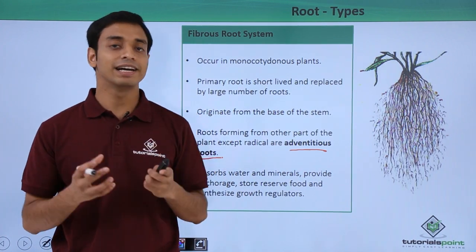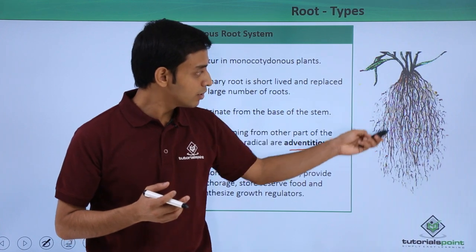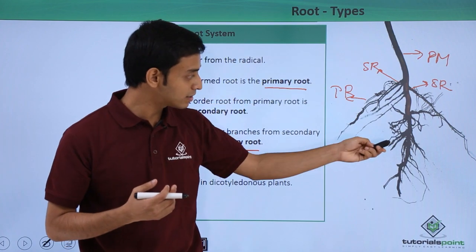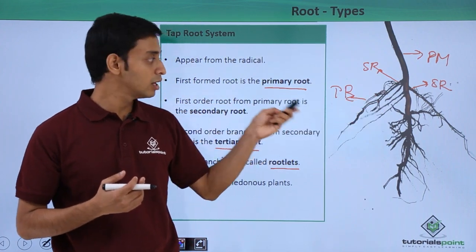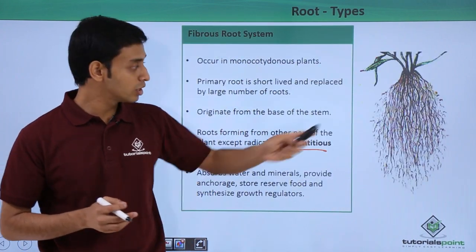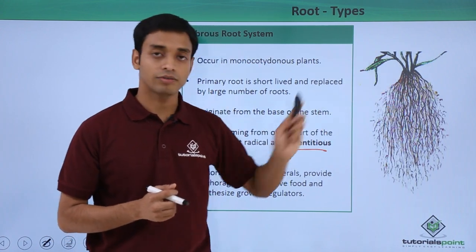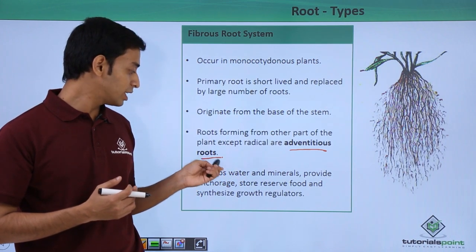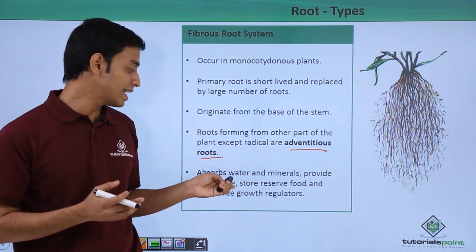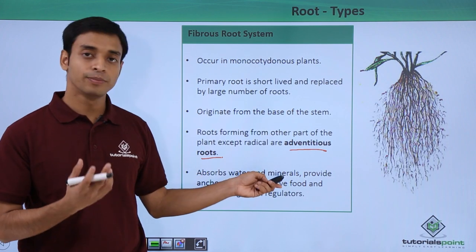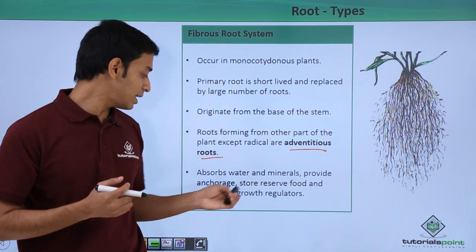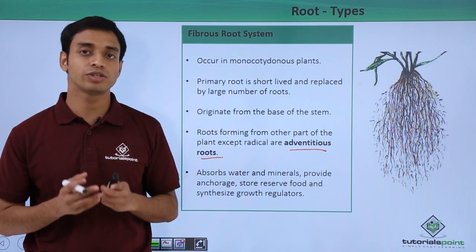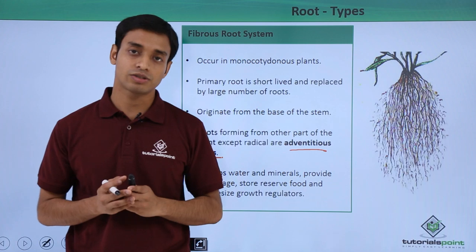There are very fine hair-like structures, and a large number of roots compared to the tap root structure. In the tap root system there is a primary axis from which branches form, but in adventitious roots a large number of roots form from the base of the stem.